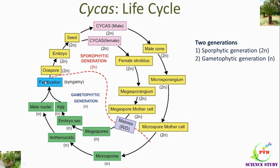When we connect a line between fertilization and meiosis, we will see that the upper portion is occupied by the sporophytic generation and the lower part is occupied by the gametophytic generation. So by this way the sporophytic generation alternates with the gametophytic generation and gametophytic generation alternates with the sporophytic generation. Therefore, this is known as the life cycle of Cycas.